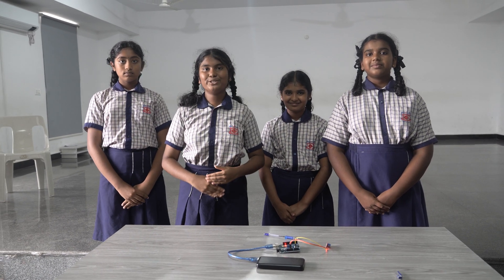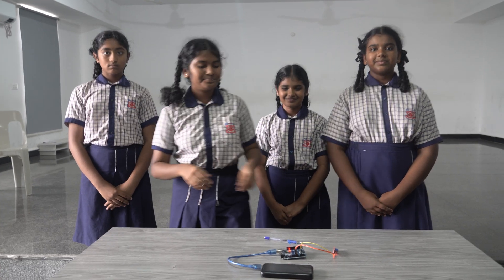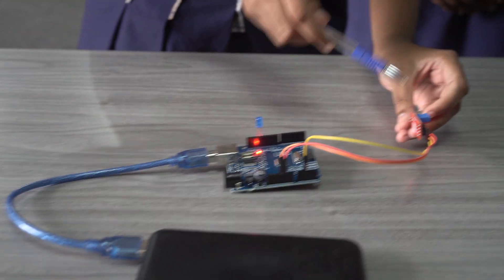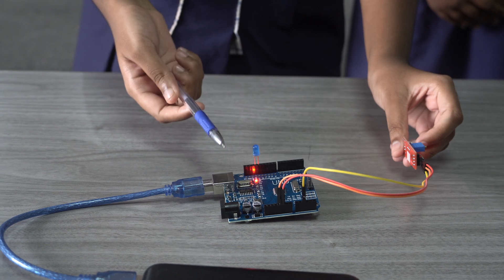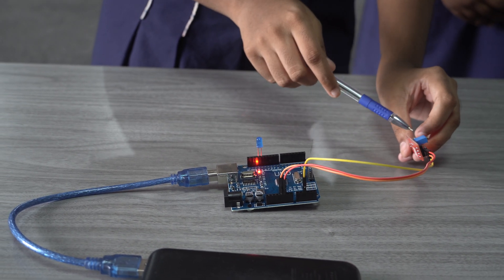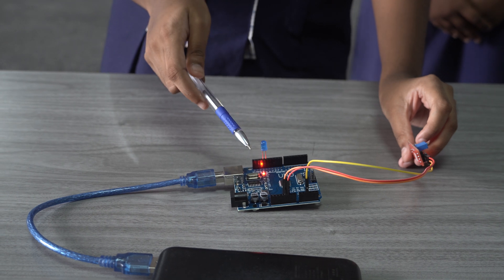The connections that we need to make for this project are: We need to connect the positive pin of the digital sound sensor to the 5V on the Arduino board. Then, we have to connect the ground of the digital sound sensor to the ground on the Arduino board.